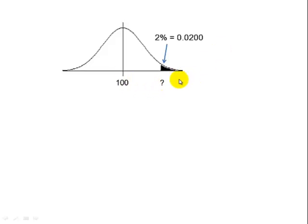Now, from the problem, we have to score in the top 2%, and 2% is the same thing as 0.0200. Now, table 5 gives us area to the left. This is area to the right. So our first step is we need to find the area to the left.